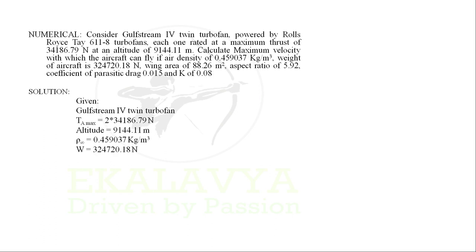Weight of the aircraft is denoted as W = 324720.18 N. Wing area is denoted as S = 88.26 m². Aspect ratio AR = 5.92. Coefficient of parasitic drag CD0 = 0.015, and K = 0.08.